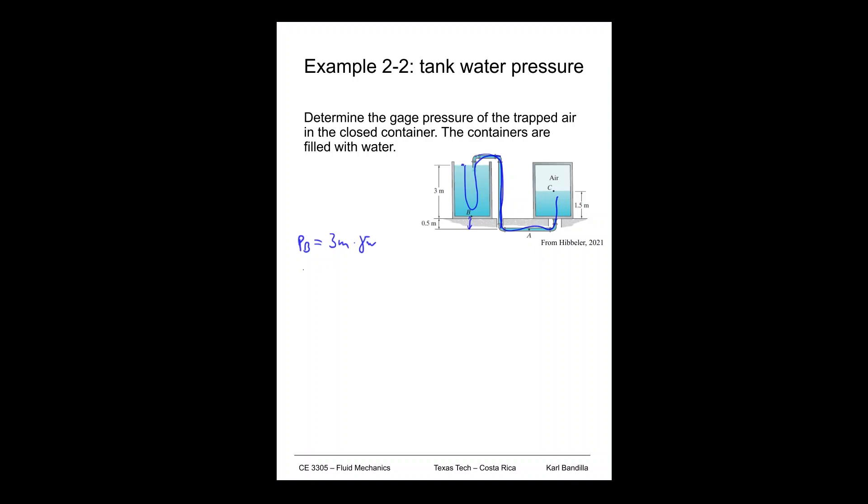So I can say that PA is then just going to be PB plus now 0.5 meters. That's the depth difference, times gamma water. Or 3 meters times gamma water plus 0.5 meters times gamma water for a total of 3.5 meters times gamma water. Alright, so now I'm at A.